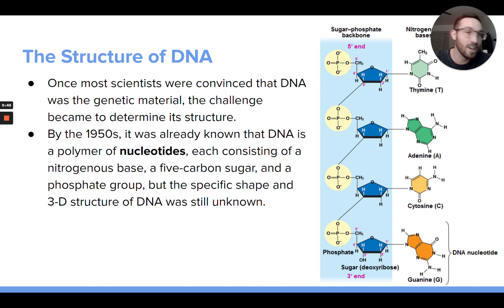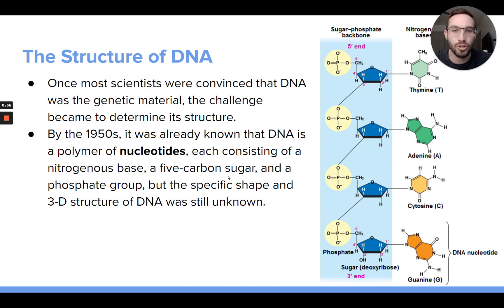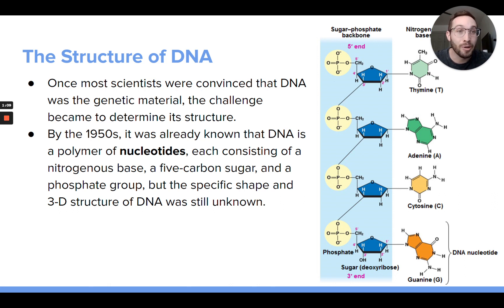At that point in the 1950s, they actually did not know the three-dimensional structure of DNA. They did know that DNA was made of nucleotides, that it was a nucleic acid — a polymer of nucleotides — and that nucleotides have a nitrogenous base, a pentose sugar, and a phosphate group. But that's basically all they really knew. They didn't know the three-dimensional structure, like the twisted ladder double helix. By the later half of the 1950s, all of this would be figured out very quickly.